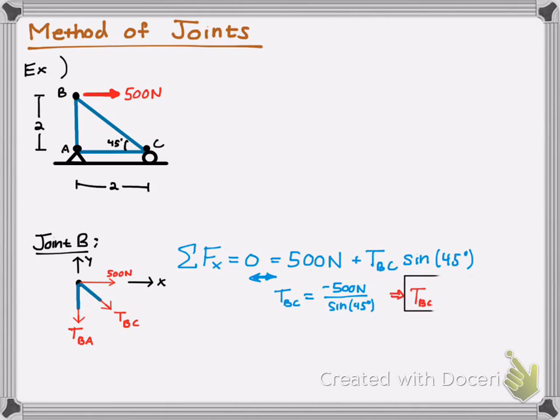And that can be rewritten by solving for TBC, and we will get negative 707 newtons. Now, what does that negative sign mean? Well, that negative sign simply means that the system, or at that point, is in compression. That means it's kind of being squeezed together rather than pulled apart.